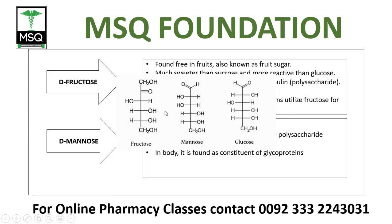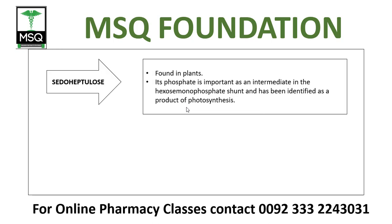Fructose, mannose, and glucose are isomers. If you compare their structures, the number of carbons, hydrogens, and oxygens are the same, but the position of H and OH groups differs. Sedoheptulose is only found in plants as a phosphate and is important as an intermediate in the hexose monophosphate shunt; it has also been identified as a product of photosynthesis — the process by which plants use sunlight to produce energy.